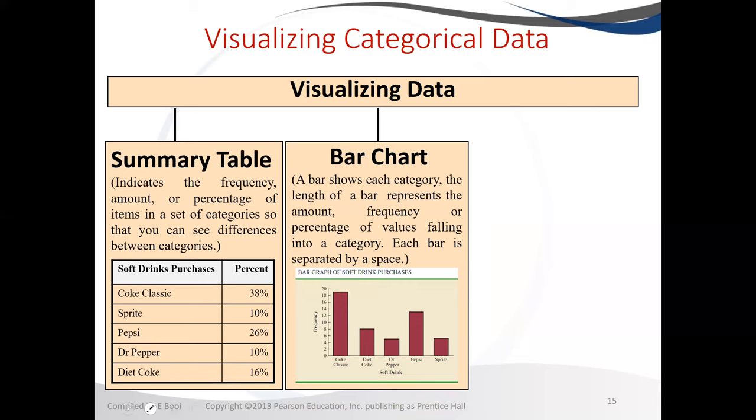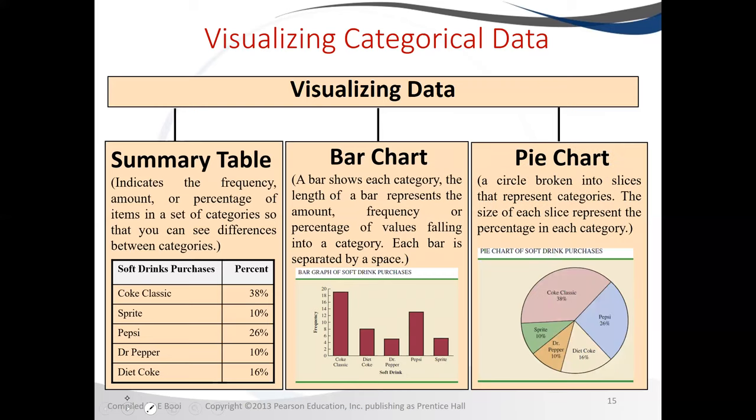Or we can represent it by using a pie chart. The slices of the pie will represent your categories, so you will have your individual categories. And the size, how big the slice is, will represent your count or your frequency.